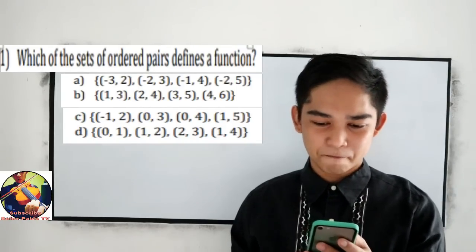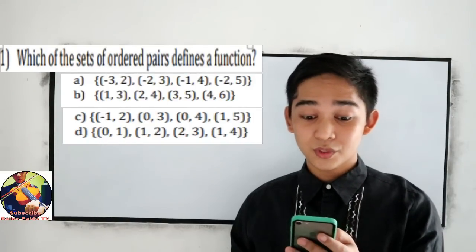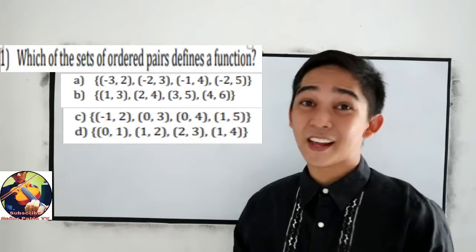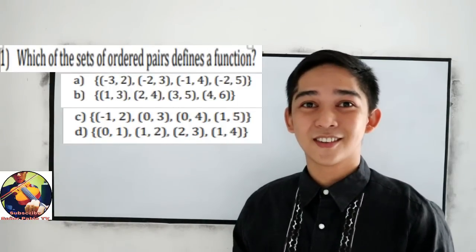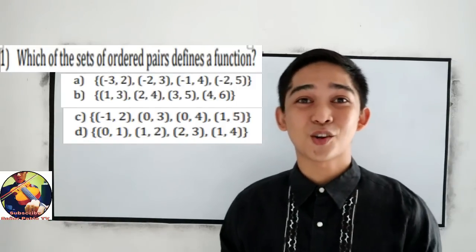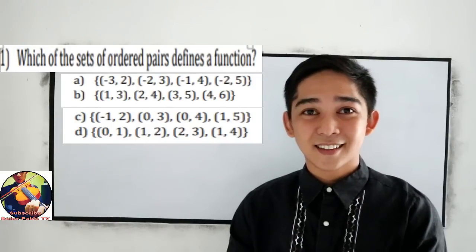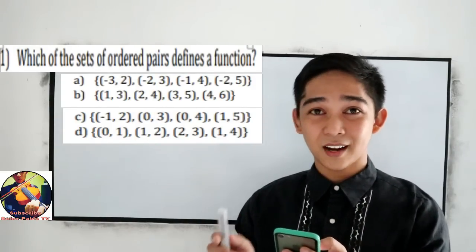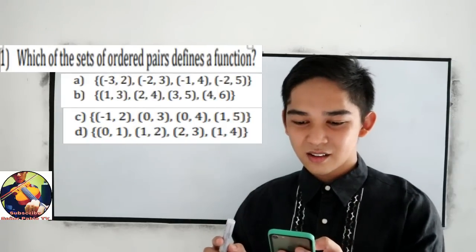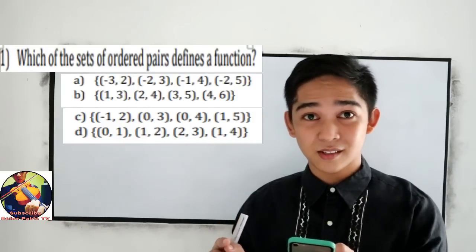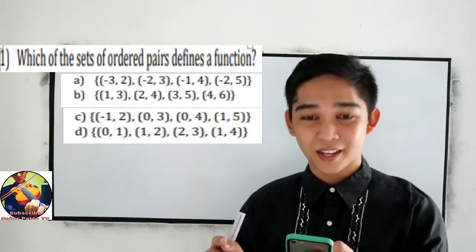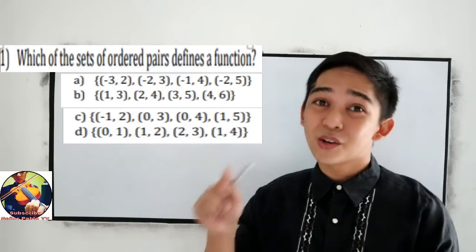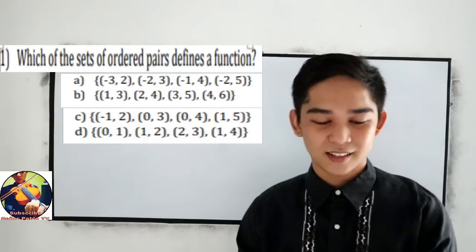How about letter B? The x-coordinates are 1, 2, 3, and 4. Letter B is our answer because the x-coordinate is not repeated. In letter C, 0 is repeated twice as our domain. And for letter D, 1 is repeated twice. So the correct answer in number 1 is B.